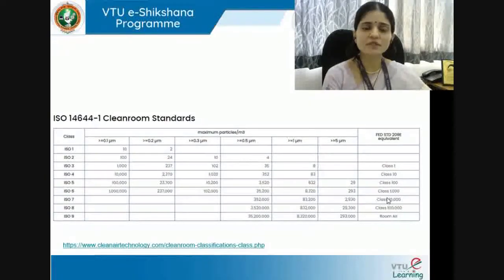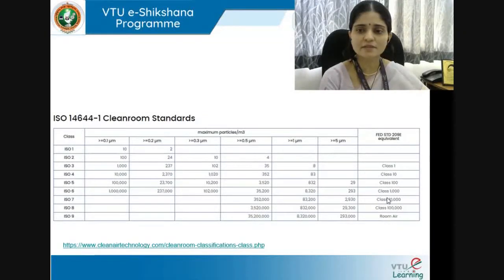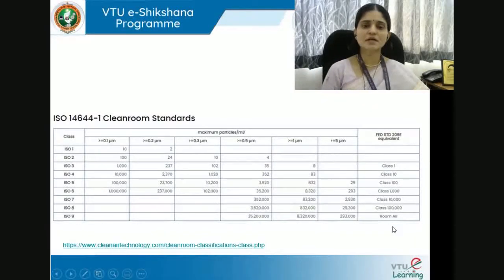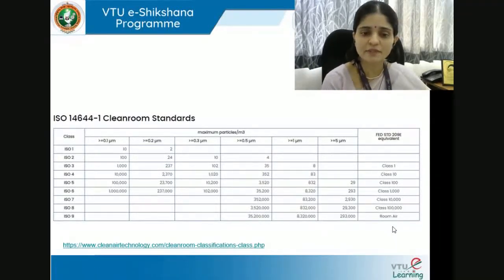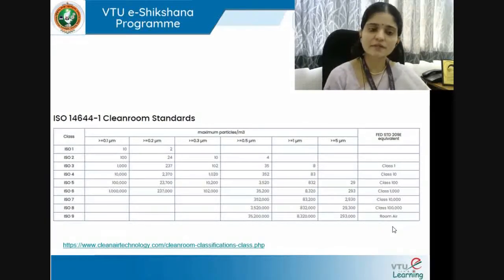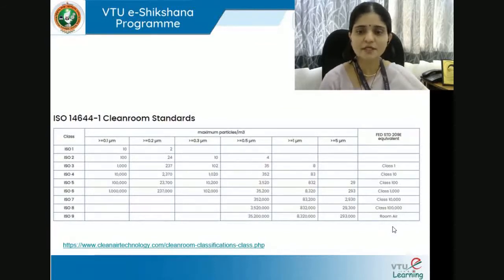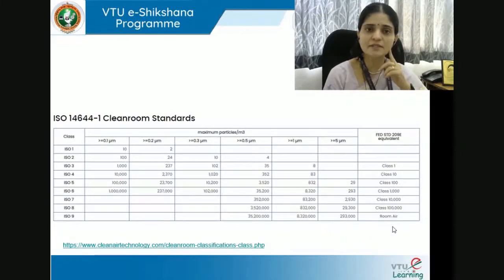These are some clean room standards listed by ISO and Indian standards. Rooms are classified as Class 1, Class 10, 100, 1000, up to one lakh based on the number of particles per cubic meter permitted. ISO standards or ASHRAE standards can be referred to for these specifications when you encounter a project and need to determine the required degree of cleanliness for the given clean room.